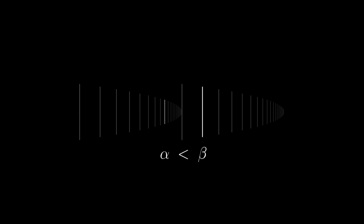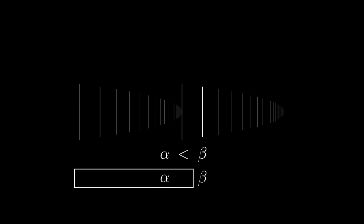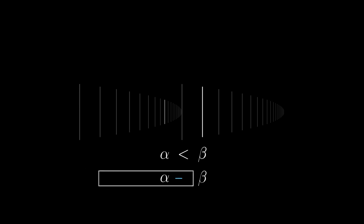Another nice view is through the graph of set membership. When we have two ordinal numbers alpha and beta, we can tell if alpha is smaller than beta by looking at whether the set beta contains alpha as an element. This was denoted by a blue arrow from alpha to beta in the chapters about the formal world of sets.